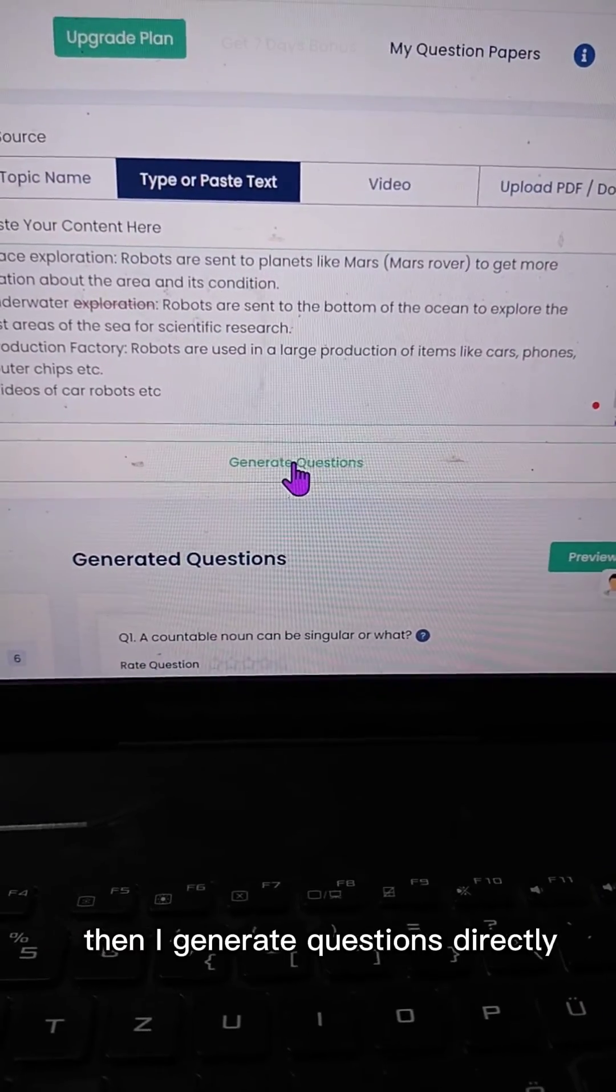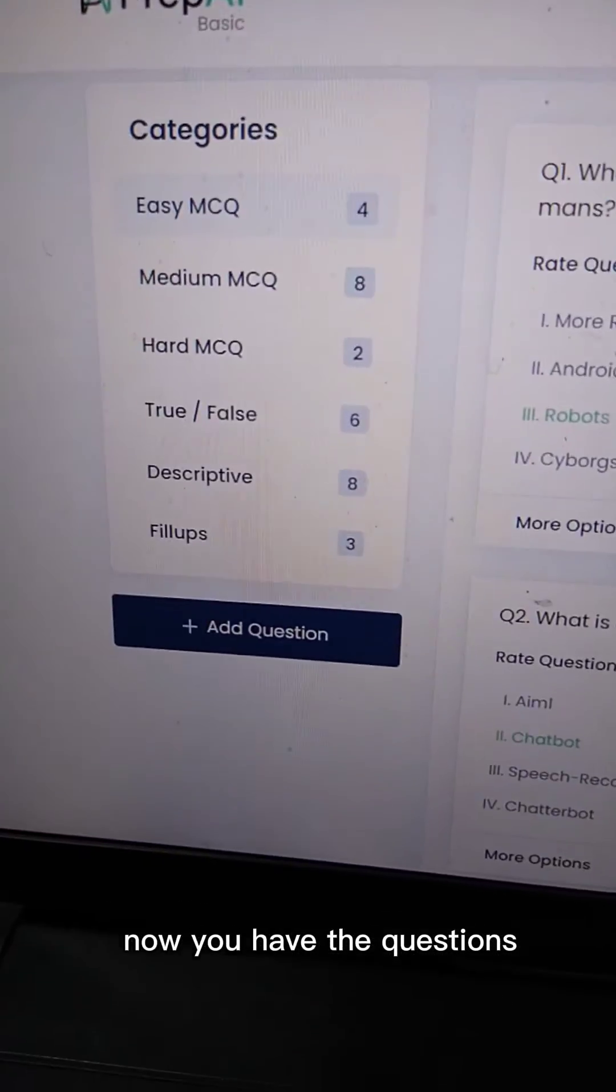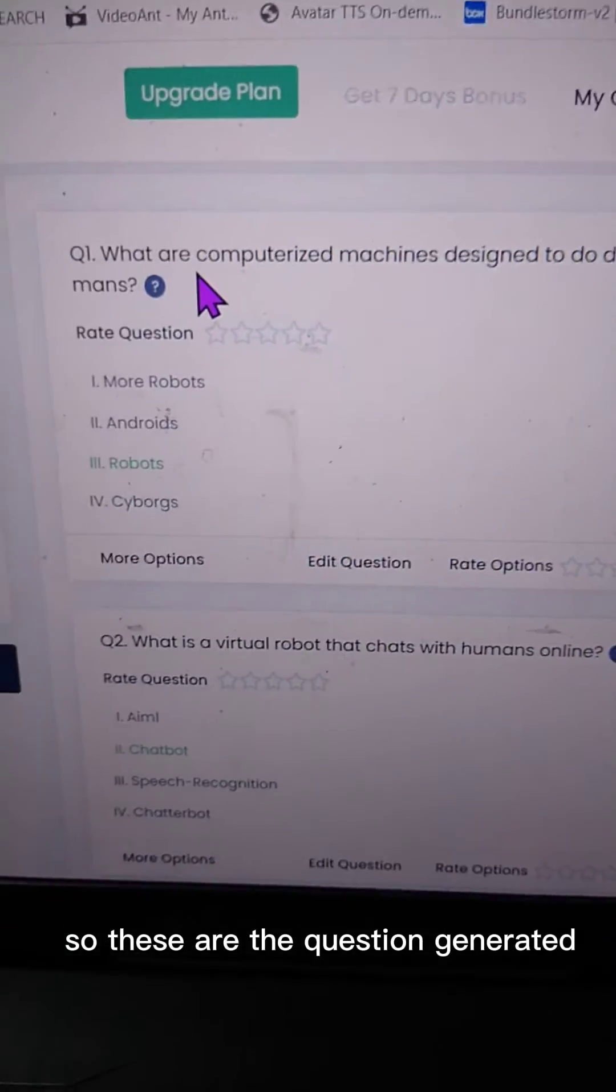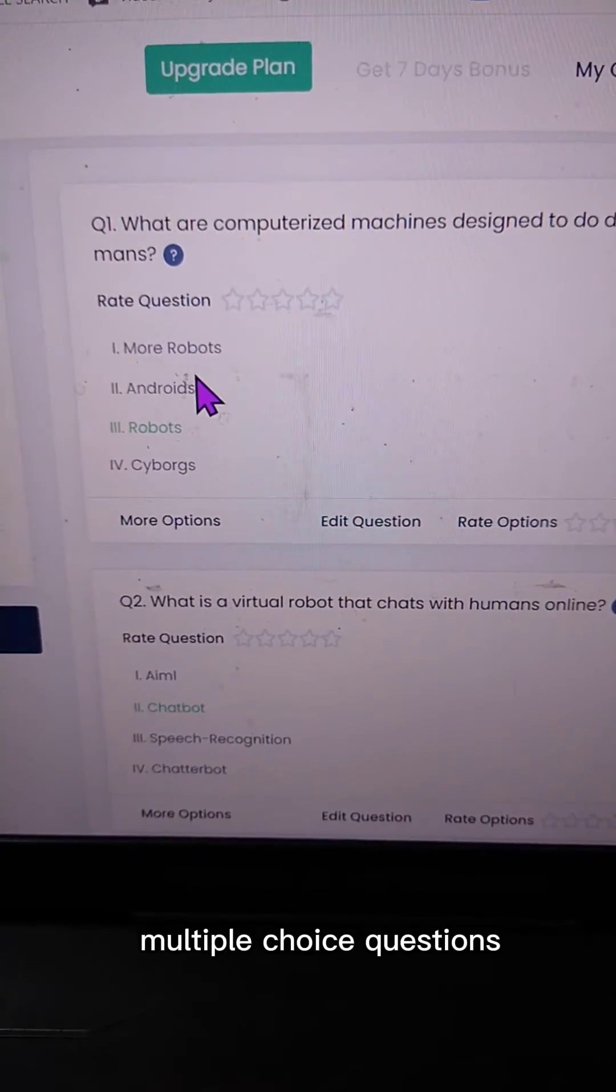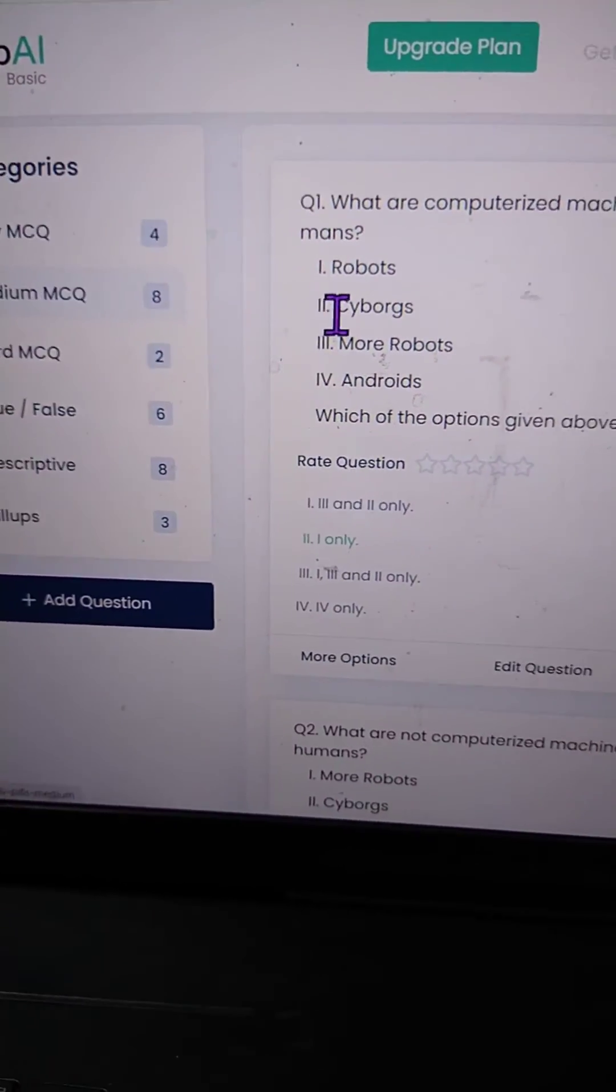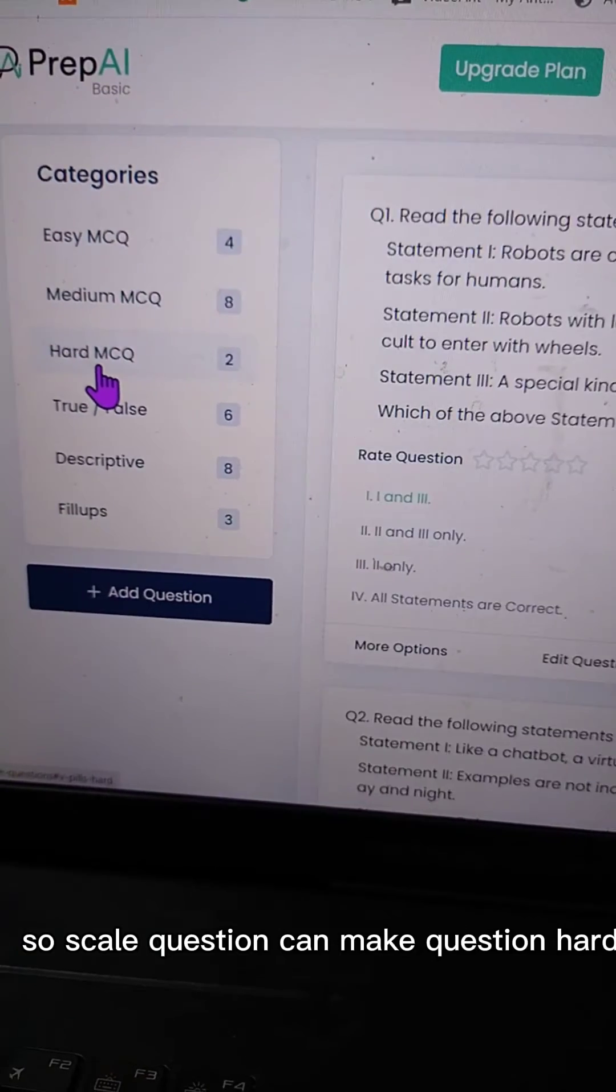Then I generate questions directly. Now you have the questions, you can make it easier. So these are the questions generated: multiple choice questions. You can use a medium, so a scale question. You can make the question hard.